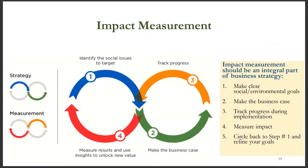In sum, impact measurement should be an integral part of your business strategy. The process involves the following circular steps. First, identify the social or environmental issue the business wants to address and specify clear goals. Second, make the business case by developing a clear impact pathway analysis. Third, track progress during implementation. Fourth, measure impact. Then go back to step one and refine your goals depending on the results of your impact measurements.